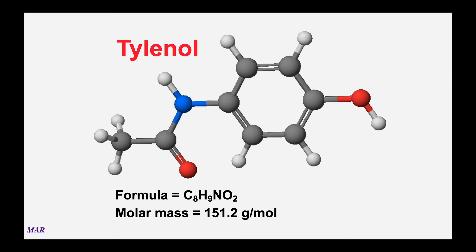Tylenol is C8H9NO2. Eight carbons (8 × 12.01) plus nine hydrogens (9 × 1.01) plus nitrogen (14.01) plus two oxygens (2 × 16) gives 151.2 grams per mole. A hundredth would be better, but that gives you the idea. This will affect your sig figs—if you needed a five sig-fig molar mass, you would not want to use a molar mass with only four sig figs. Do be aware that sometimes you need to add more sig figs depending on your calculation.